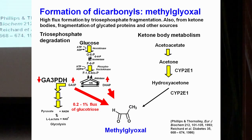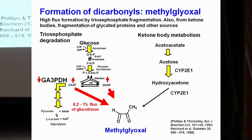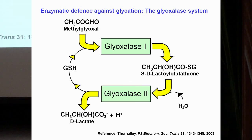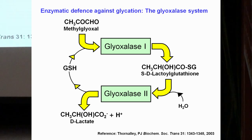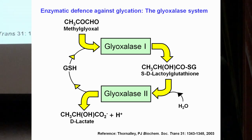Methylglyoxal is produced anywhere in glycolytic life, and life has had to accommodate its production by evolving a protective enzymatic system called the glyoxalase system. Glyoxalase I catalyzes the isomerization of the methylglyoxal-glutathione adduct to S-lactoylglutathione, and then glyoxalase II, a thiolesterase, hydrolyzes it through to D-lactate, reforming glutathione. Glyoxalase I is the key enzyme that takes away the danger of protein modification by methylglyoxal, and also DNA is damaged by methylglyoxal.